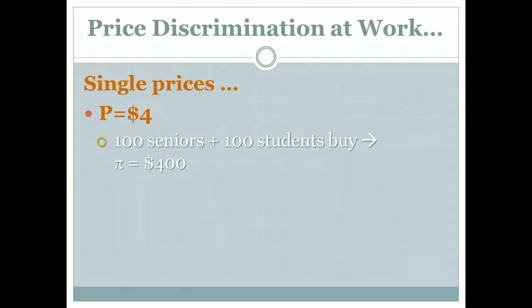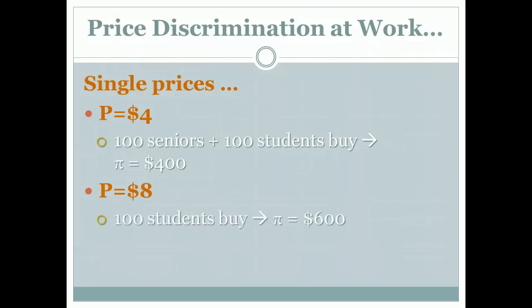Maybe they want to say the $4 price is not enough — let's try $8. In that case they'll be selling to 100 students because they'll have priced the senior citizens out of the market, and they'll end up with a profit of $600. They'll have $800 in revenue ($8 per meal times 100 students), and they'll sell 100 meals at a marginal cost of $2 per meal — that's $200 in costs — leaving $600 in profit.